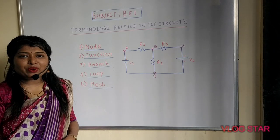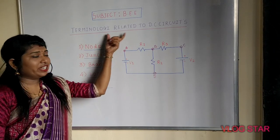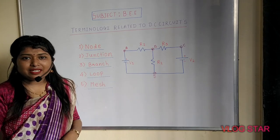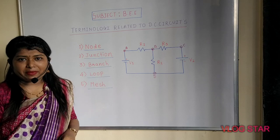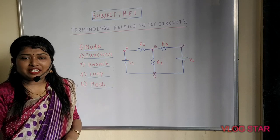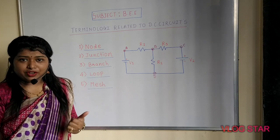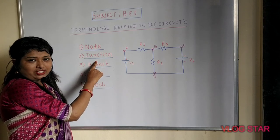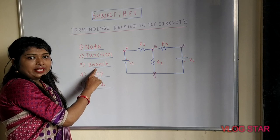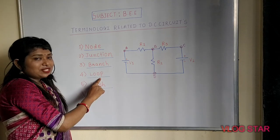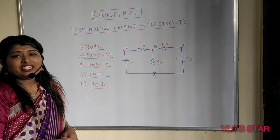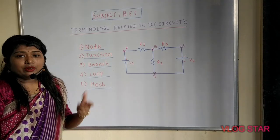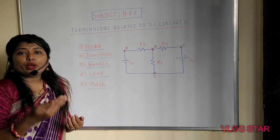Good morning all. Today we are going to learn terminology related to DC circuits. You need to remember 5 important terms: the first one is node, the second important term is junction, the third is branch, the fourth is loop, and the fifth important term related to the DC circuit is mesh.